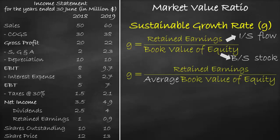Let's calculate the sustainable growth rate for the year 2018. Retained earnings is equal to $1 million divided by — let's look at the balance sheet for the shareholders' equity.